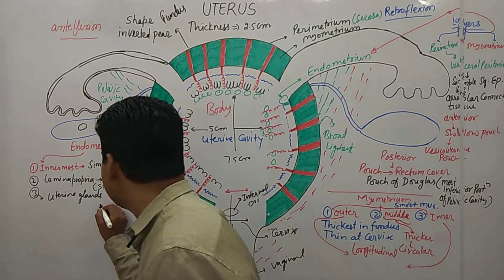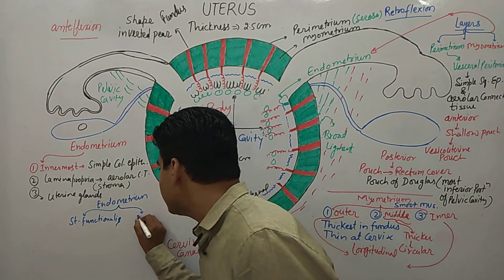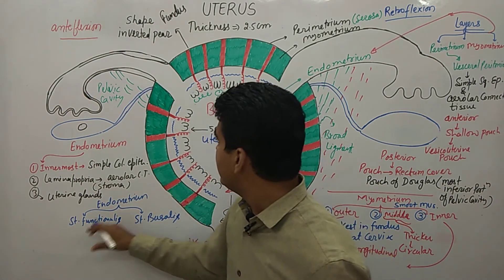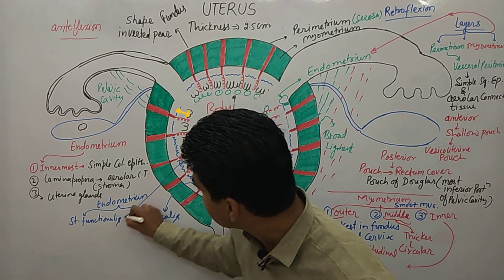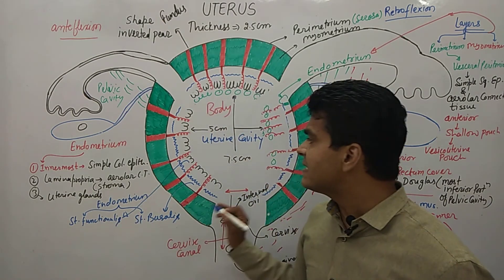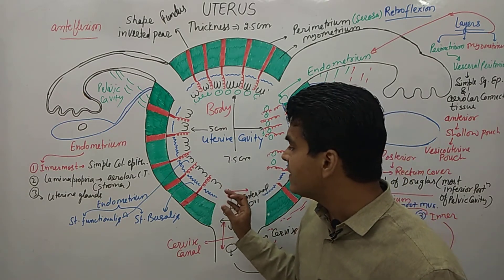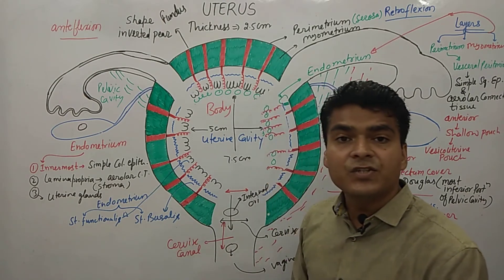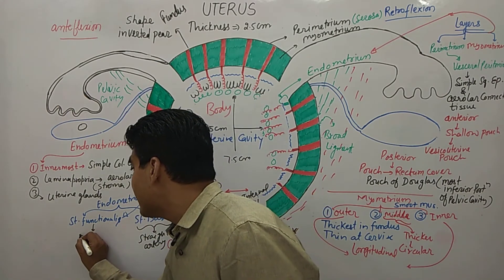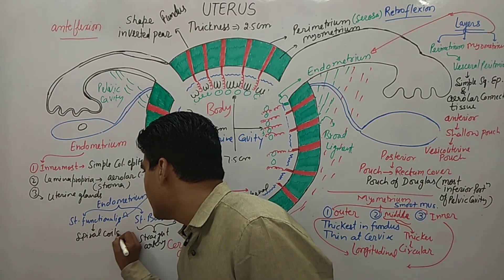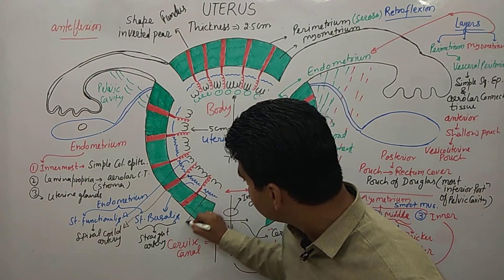The endometrium has two layers: the outer layer is the stratum functionalis and the inner layer is the stratum basalis. The stratum basalis contains straight arteries, while the stratum functionalis contains spiral coiled arteries. Both layers contain simple columnar epithelium, lamina propria, and uterine glands.